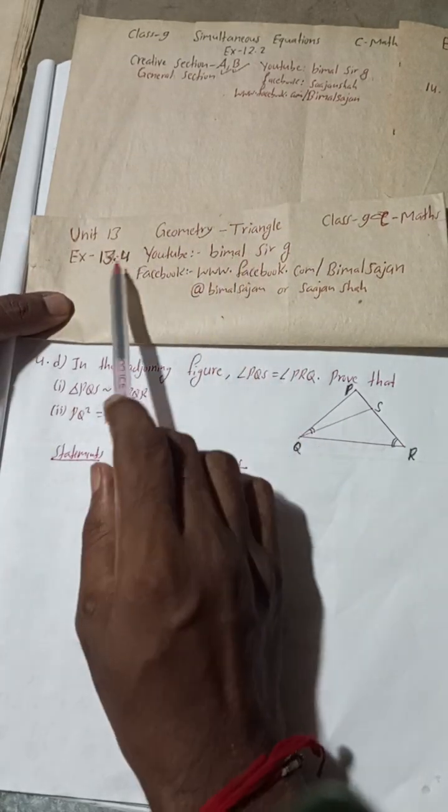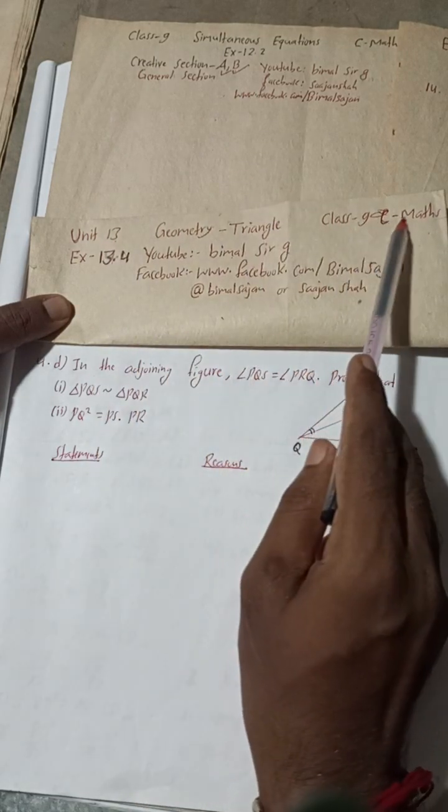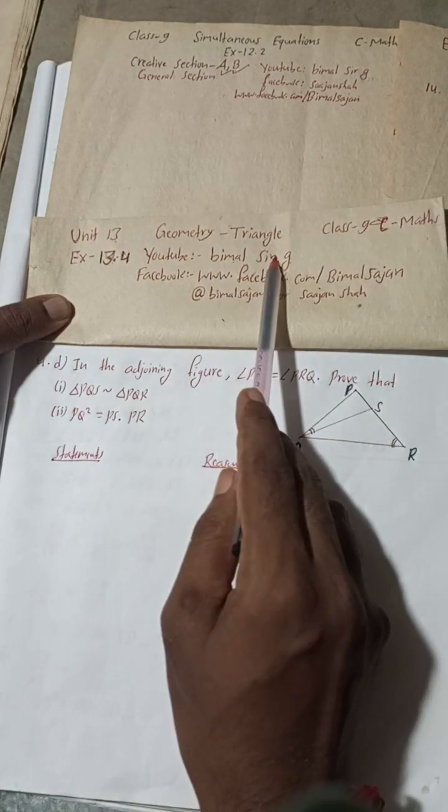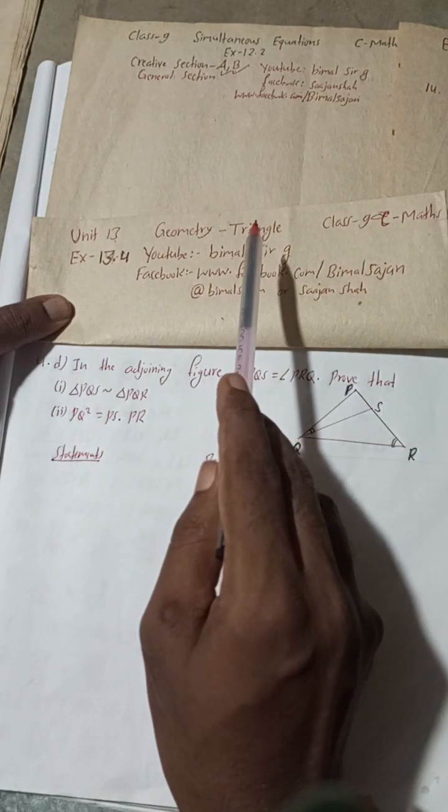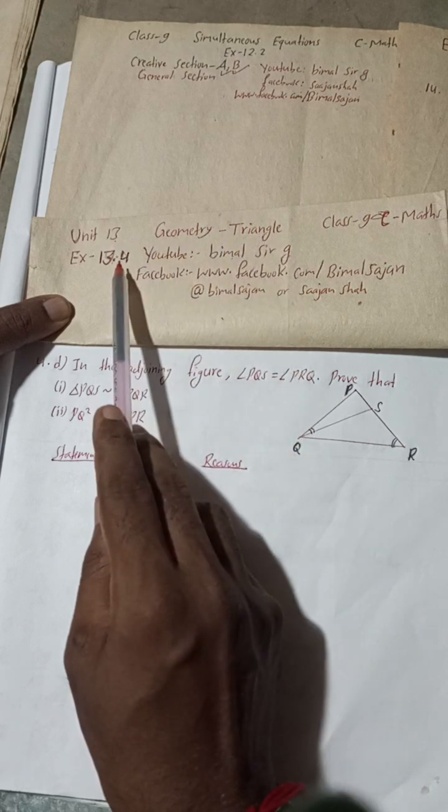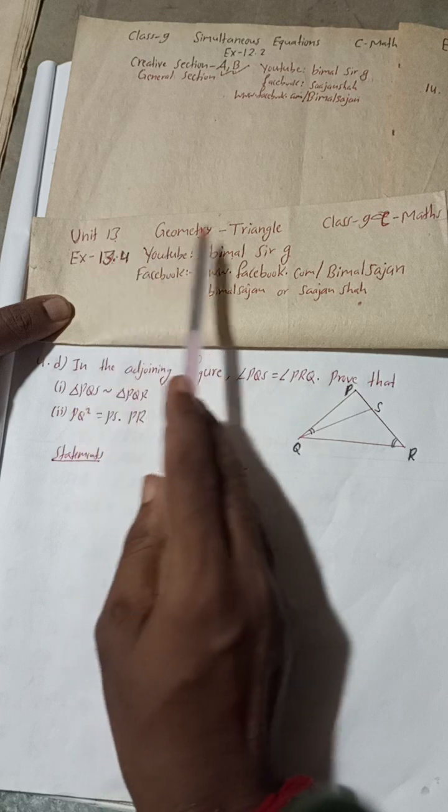Exercise 13.4, Unit 13 Geometry Triangle, Class 9 Compulsory Maths. Check the playlist here you will find Class 9 and 10 Compulsory Maths, Optional Maths and Science. Questions, answers and the reasoning parts with exercise name or topic name.